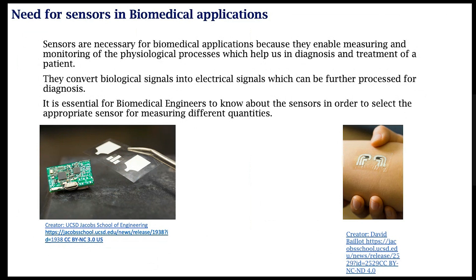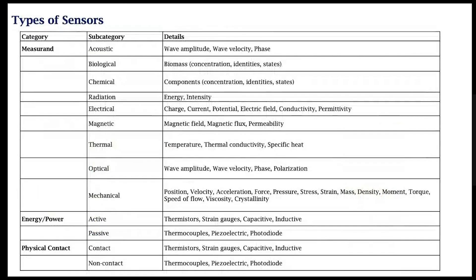You need to understand the principle of operation so that you can use an appropriate sensor for the appropriate application. As a biomedical engineer, you need to know what physiological parameter you are trying to measure and use that to come up with an appropriate choice of sensor. Also shown here are some wearable systems — for example, wearable or film-based sensors that perform different types of sensing.